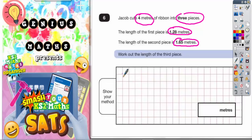Now what we're going to do is calculate how much we've cut off so far by adding together these two pieces that we've cut off. So far we've got 1.28 meters that we've cut off. We've cut off an extra 1.65 meters. So let's add those together.